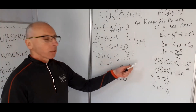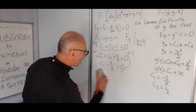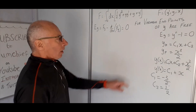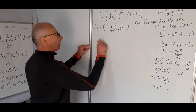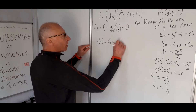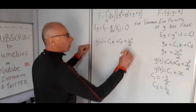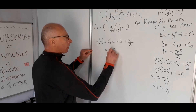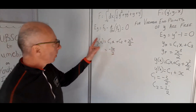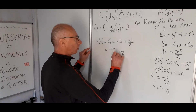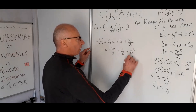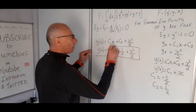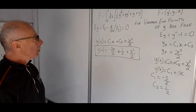Now we're ready to write our function y(x) using this information. Starting from y(x) = c1·x + c2 + x²/2, substituting c1 = -3/2 and c2 = 1/2 gives y(x) = -3x/2 + 1/2 + x²/2. That is our solution for y(x) in this variable endpoint problem.